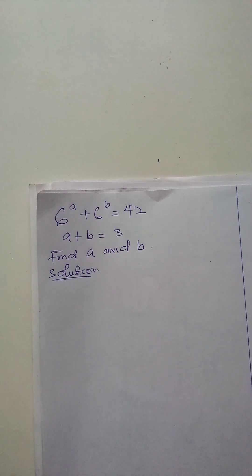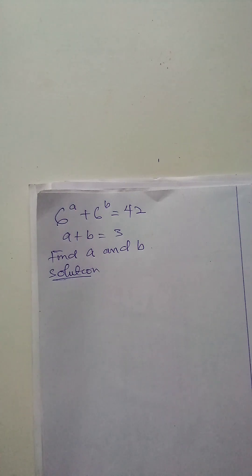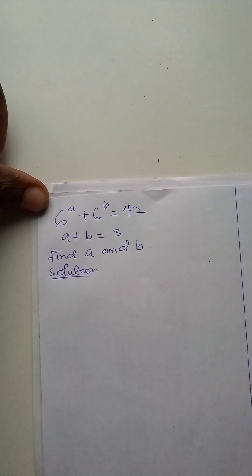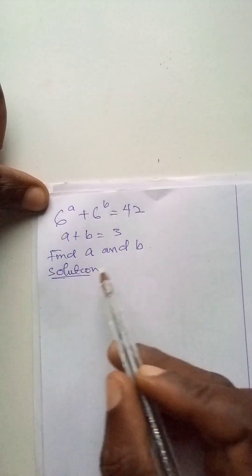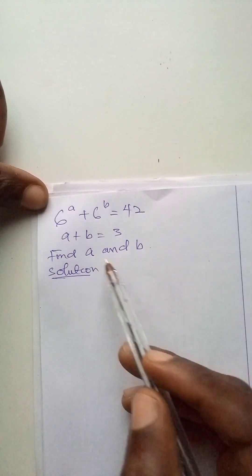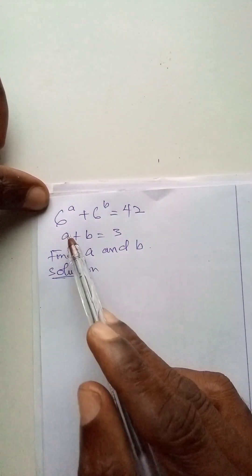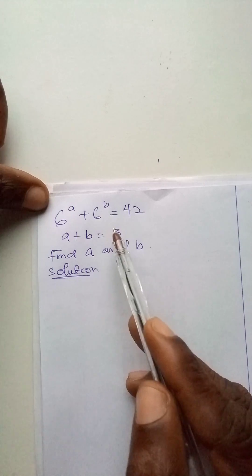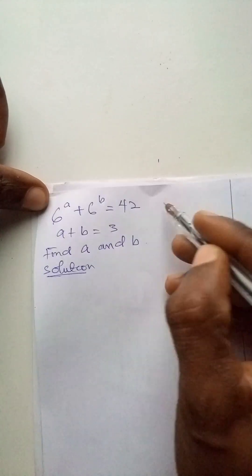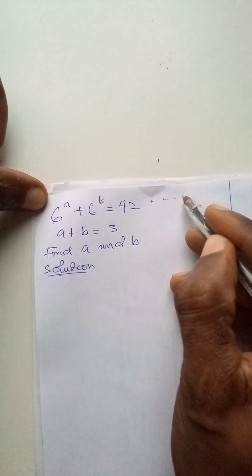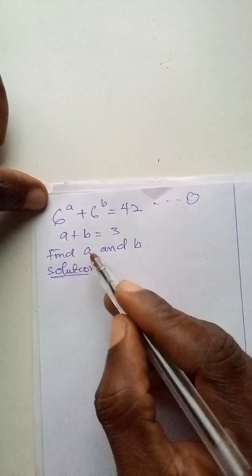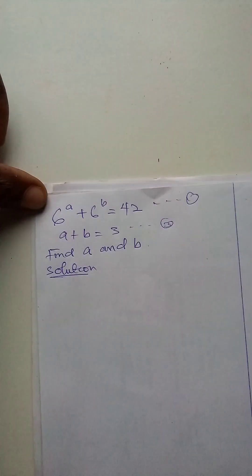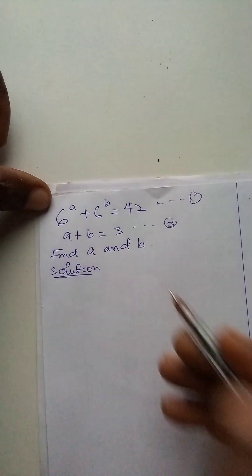Having said that, today's question is for us to find the value of A and B, given that 6 raised to power A plus 6 raised to power B is equal to 42 — that is equation 1 — and A plus B is equal to 3. So how do we go about this?